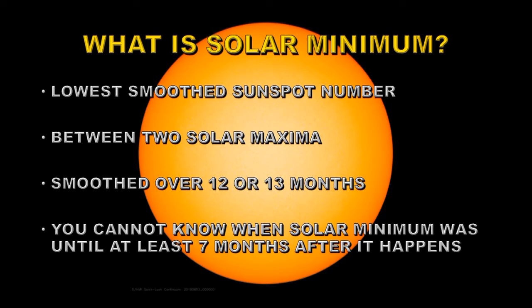The smooth sunspot number is generally smoothed over a 12 or 13 month period — I generally prefer the 13 month version. And thus you cannot know when solar maximum actually was until at least seven months after, and if you're wise you wait for at least a year in case the sunspot numbers go back down again.